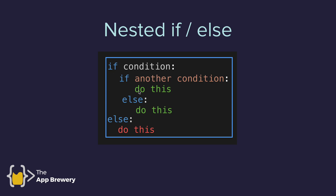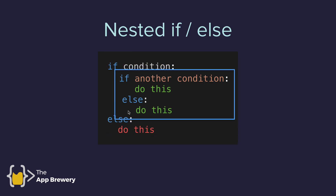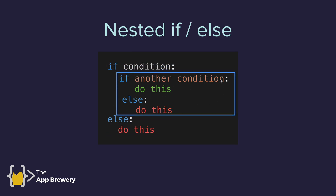In order for this thing to happen, this has to be true and this also has to be true. In order for this to happen, this condition has to be true but this condition has to be false. So essentially, the computer first looks at the larger picture — the first condition — and decides whether it should go into the else block or into the nested block inside the if-statement.